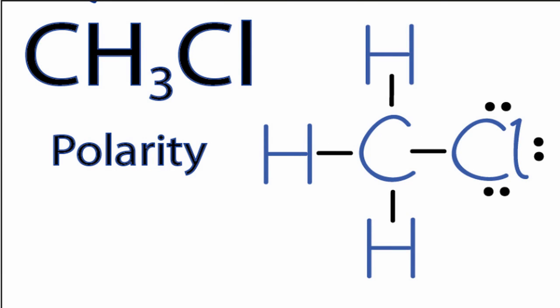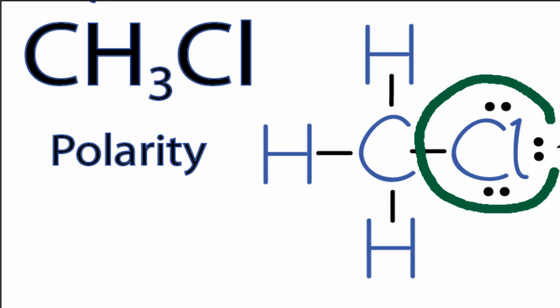To determine the polarity of CH3Cl, we'll look first at the Lewis structure. From the Lewis structure for CH3Cl, we can see that we have this chlorine here on one side, and on the other parts of it we have hydrogens.